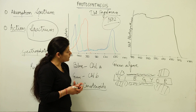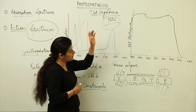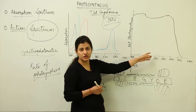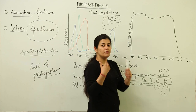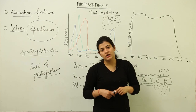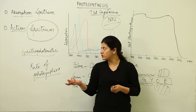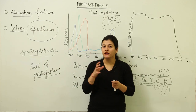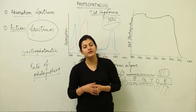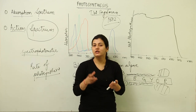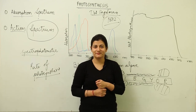From the absorption spectrum we also derive the action spectrum. These are the two key terms you have to remember before you study the actual mechanism of photosynthesis — how it takes place and what units are involved in it.